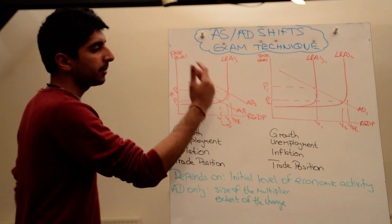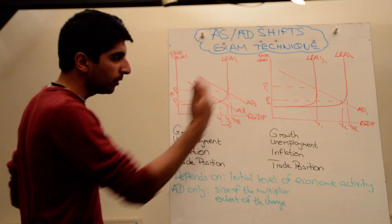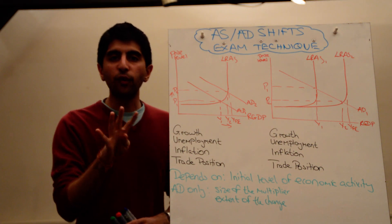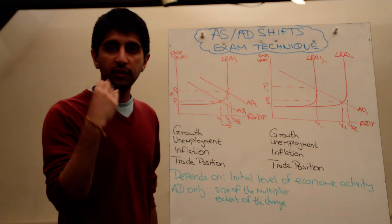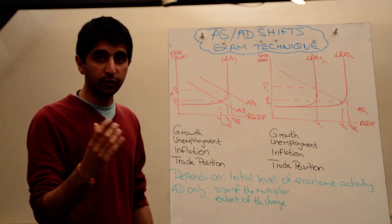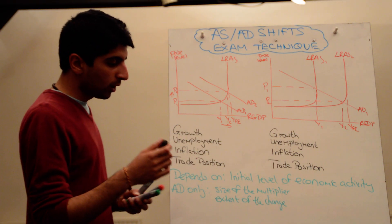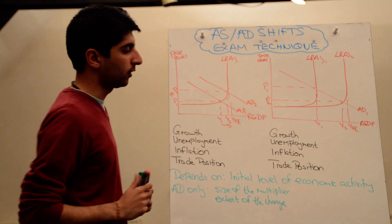Right, aggregate demand shifts to the right for a whole host of reasons which doesn't really matter. So for some reason aggregate demand shifts to the right, we then need to analyze the effect on the four key macroeconomic variables. From one diagram, what's going on to these four objectives when aggregate demand shifts to the right?